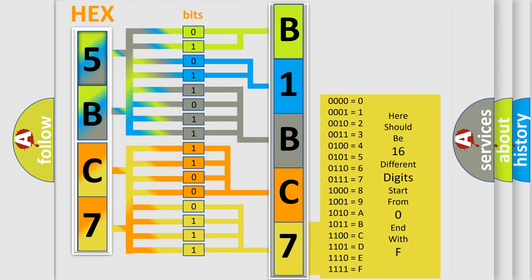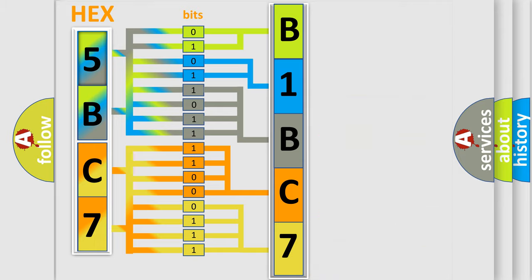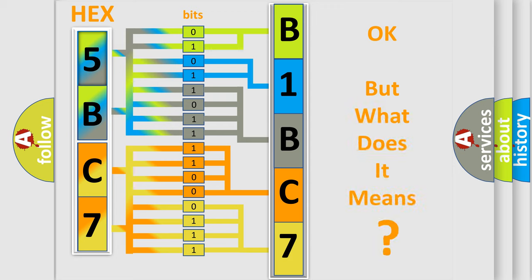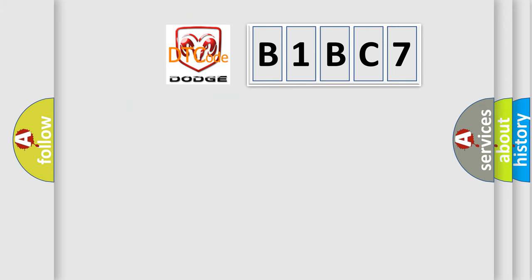We now know in what way the diagnostic tool translates the received information into a more comprehensible format. The number itself does not make sense to us if we cannot assign information about what it actually expresses. So, what does the diagnostic trouble code B1BC7 interpret specifically for Dodge car manufacturers?